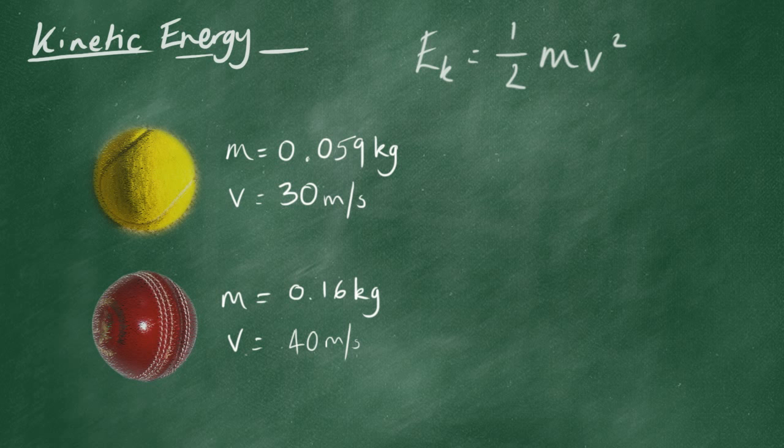We're going to use our equation for kinetic energy. So just copy down the term we want to calculate. Ek is a half times mass, 0.059, times 30, the velocity, squared.